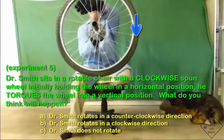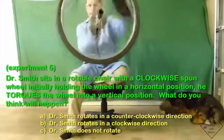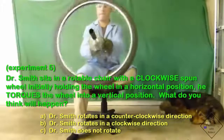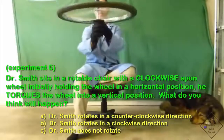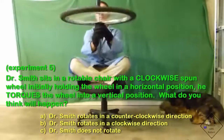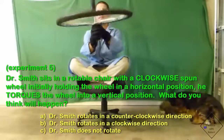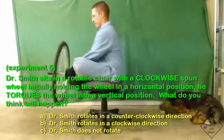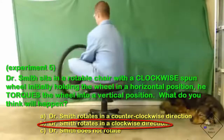Dr. Smith sits in a rotatable chair with a clockwise spun wheel. Initially holding the spinning wheel in a horizontal position, he torques the wheel into a vertical position. The answer is B.